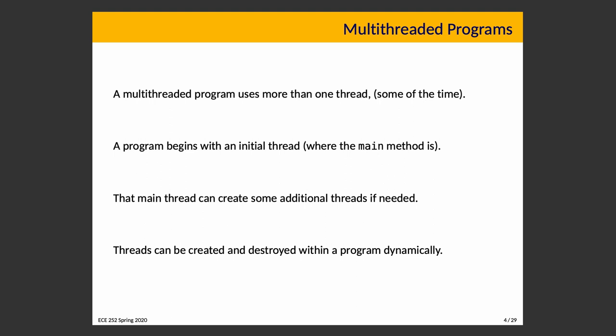A thread can also be created for a specific purpose — say, a write to the database — and then terminate when it has finished the assigned task. In that sense, you can think of threads as being somewhat like child processes: they are created at the request of a caller (in this case a parent process), and they can be persistent or do a specific thing and then terminate.